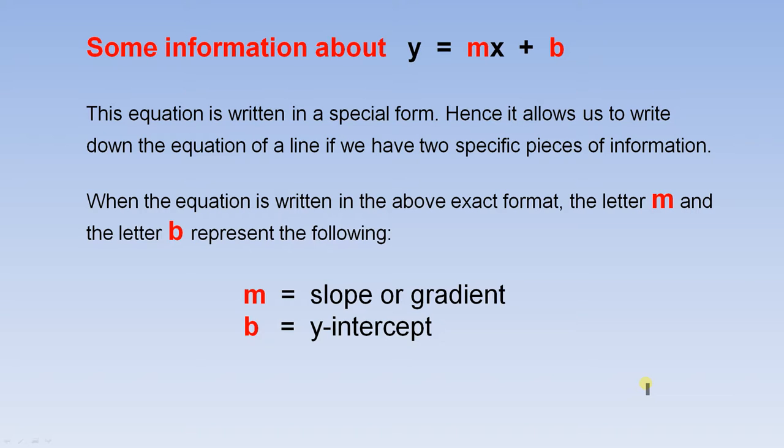Some information about y equals mx plus b. The equation is written in a special form. Hence, it allows us to write down the equation of a line if we have two specific pieces of information. When the equation is written in the above exact form, the letter m and the letter b represent the following. m is the slope or gradient and b is the y-intercept.